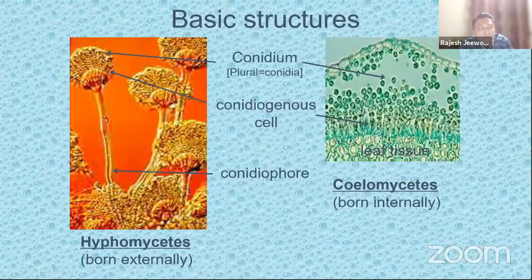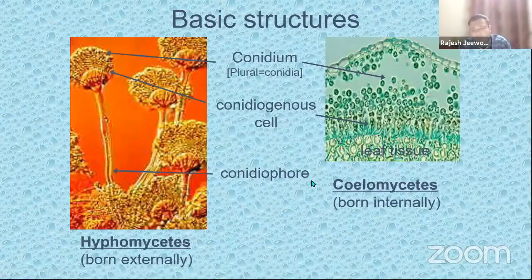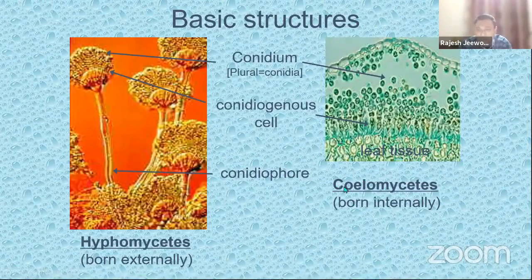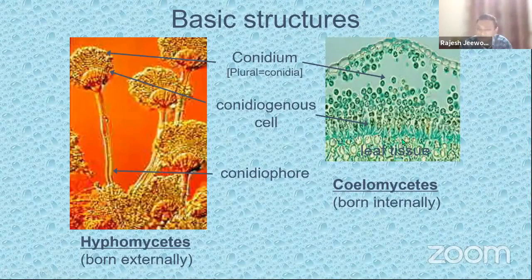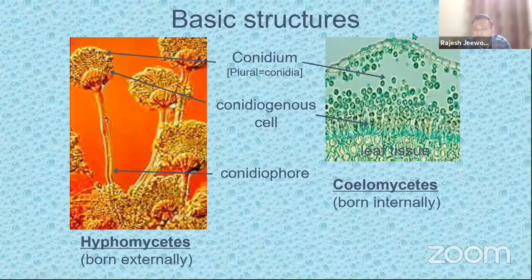The basic structures you will see with most asexual fungi — they exist as hyphomycetes, which is basically a conidiophore, like a long branched structure, and then you've got the spores on top. Or sometimes they are referred to as coelomycetes because they've got a cavity — a silo means a cavity — and they are integrated in the plant substrate. The spores are inside. Whenever there is a favourable condition, the epidermis layer will break open and the spores will be released to colonize other habitats.